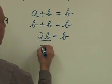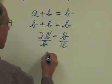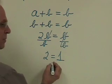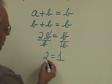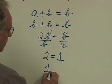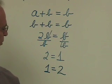If I divide each side by b, I get 2 equals 1. Since we have 2 equals 1, these sides can be interchanged, and that means that 1 equals 2.